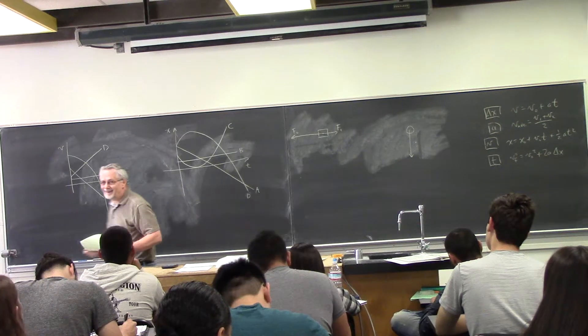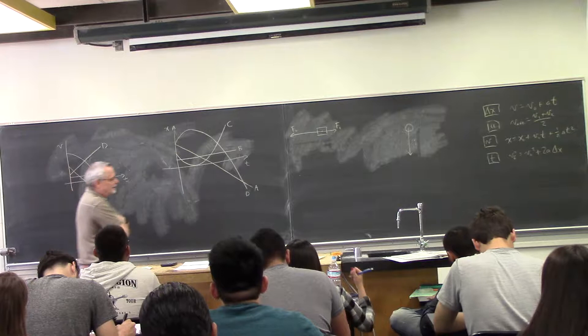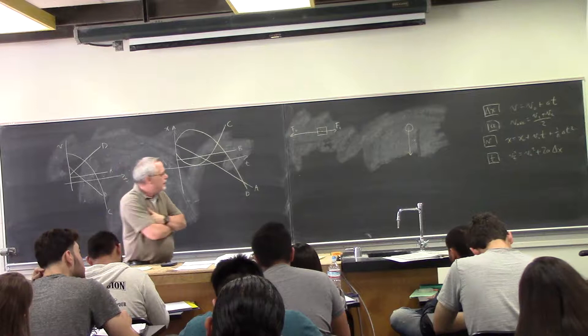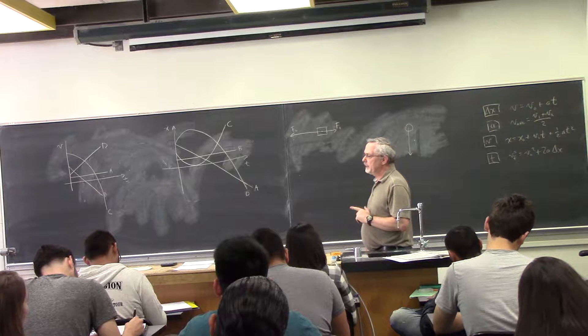Now we're looking at a displacement versus time graph. I wrestled with this a little bit, because to answer this question really clean, calculus would really help. But calculus is not a prerequisite. So I'm going to do the following. If I have a constant velocity, what do I expect the displacement graph would look like?